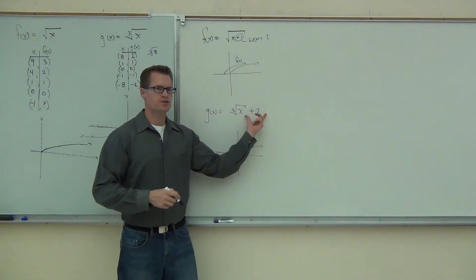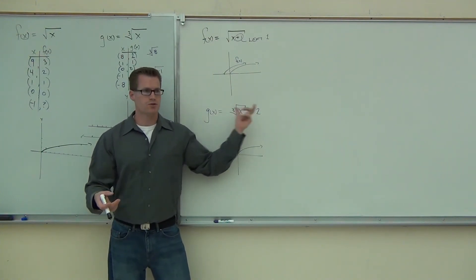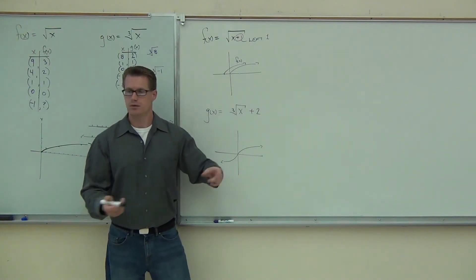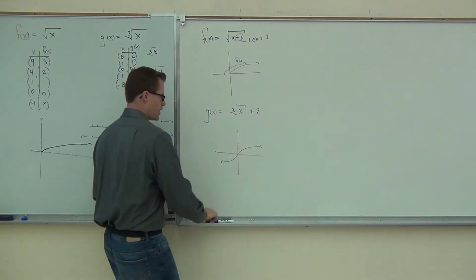Can you tell me what this plus 2 does? Is the plus 2 within the function or after the function? So is it a horizontal shift or a vertical shift? Definitely. And is it going to go up or down? So this says you're going to take your graph, just move it up two spots.